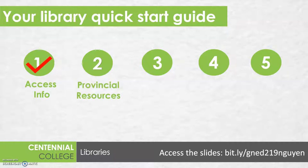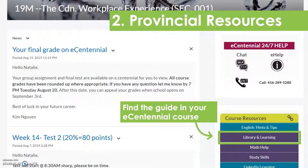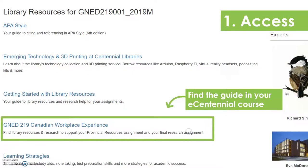To get started on your Provincial Resources assignment you're going to want to head to the GenEd 219 Library Guide. You can access the guide by heading to your eCentennial course shell and then choosing Library and Learning from the right hand side of the screen. Next, you'll choose the GenEd 219 Canadian Workplace Experience Guide link.